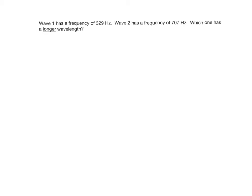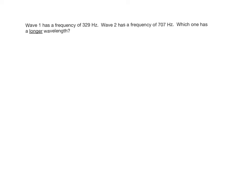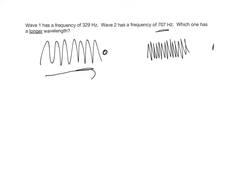So wave one, remember frequency just basically means that you're gonna see more waves in a given amount of time if it's moving along. So this wave is moving along, you're standing here. Here you're seeing 329 waves per second. This one, wave two, you're seeing 707, so they must be closer together because in order to see more waves if they're moving the same speed they have to be closer together.